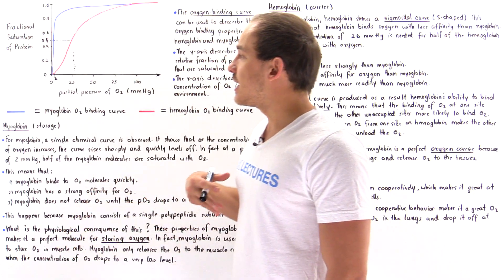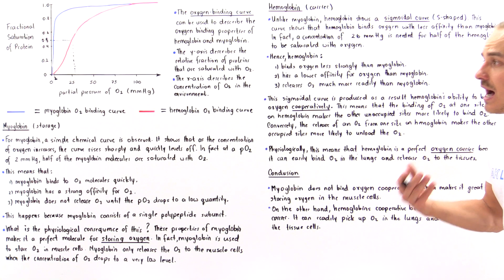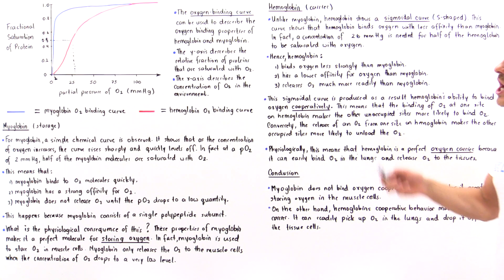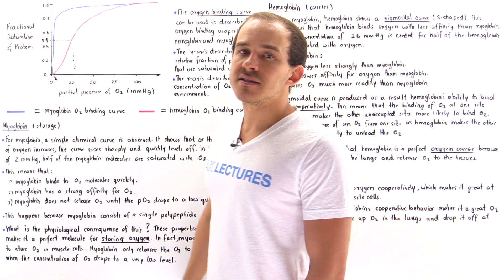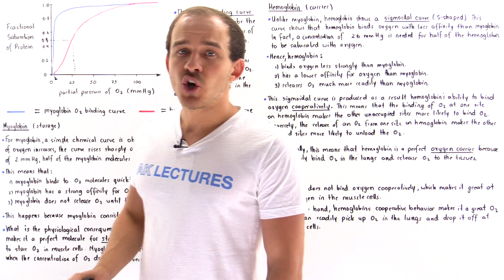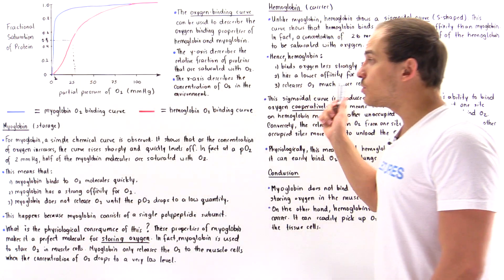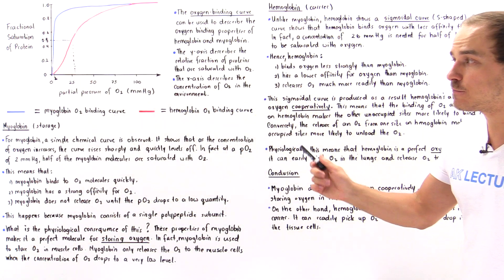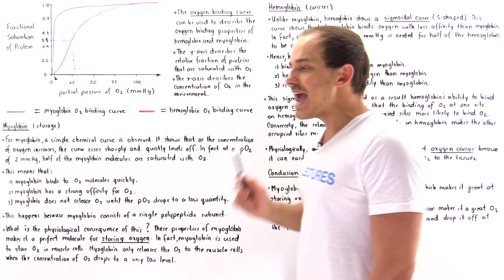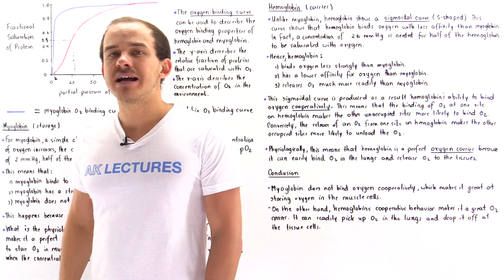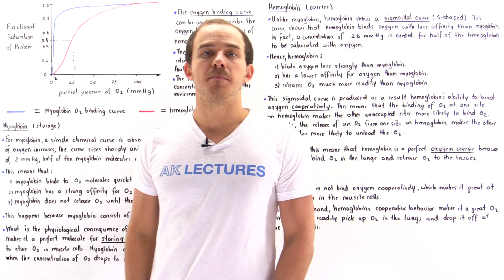We'll discuss in much more detail the physiological consequences of hemoglobin and myoglobin in the next lecture, where we'll see exactly why it's hemoglobin and not myoglobin that is used as the oxygen carrier inside the red blood cells of our body.